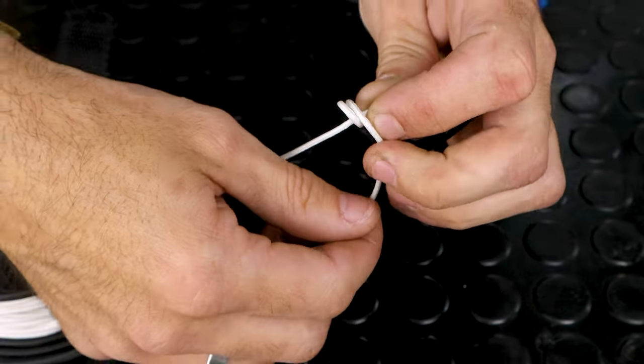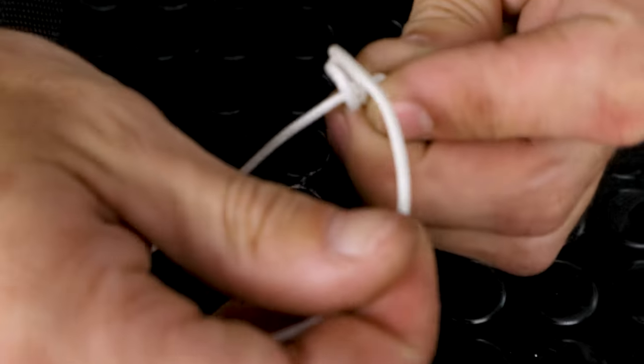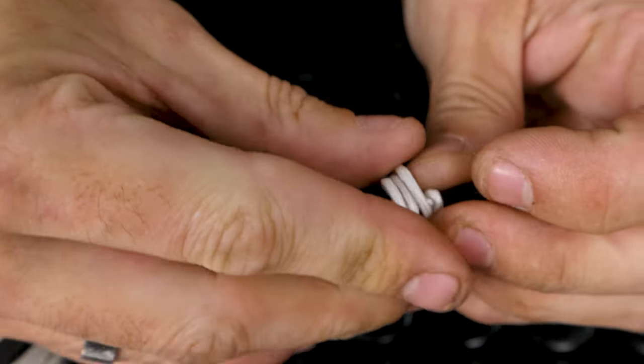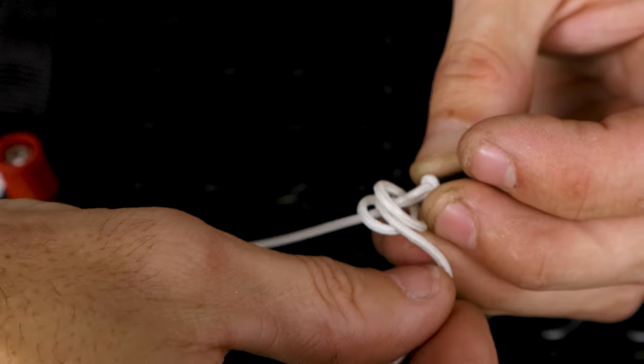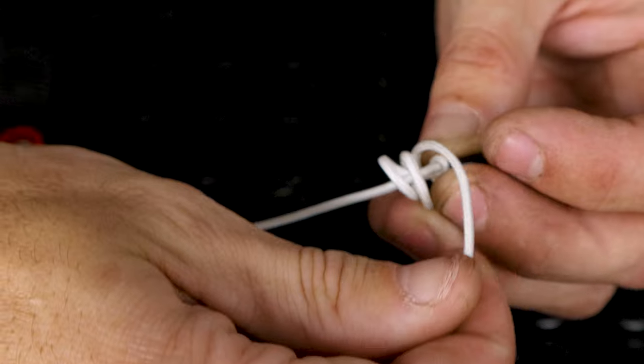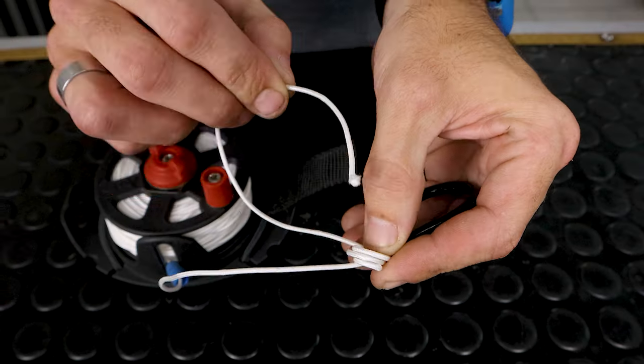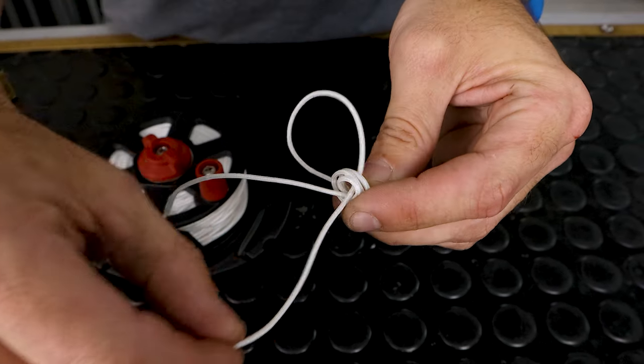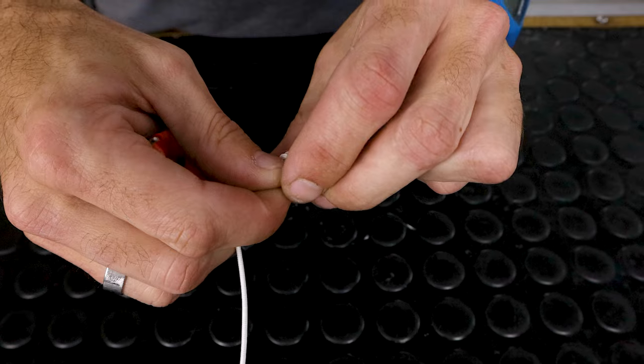You will need to keep these loops loose enough so you can pass the tag end underneath all three loops as shown.